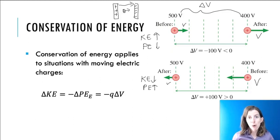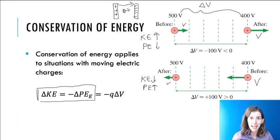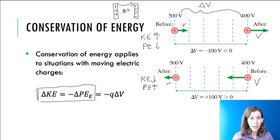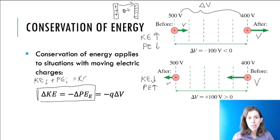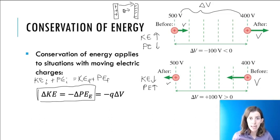The equation for conservation of energy is given here: the change in kinetic energy equals the negative change in potential energy. Remember, this just comes from the fact that as one goes up, the other one goes down. If you write conservation of energy like we did in physics one, we wrote KEi + PEi = KEf + PEf — there's no friction here. If you rearrange these variables to get KE on one side and PE on the other, then you will get this.